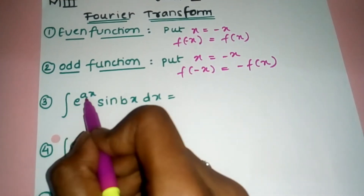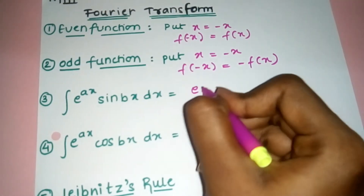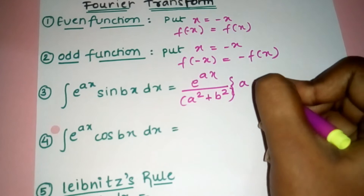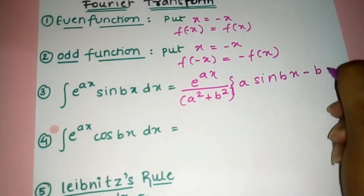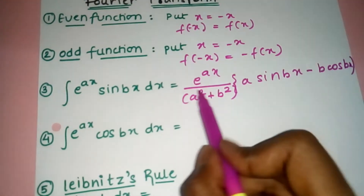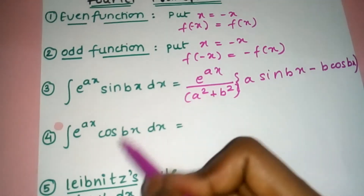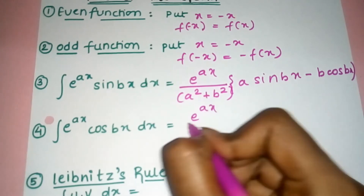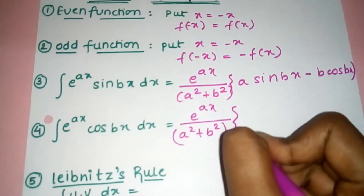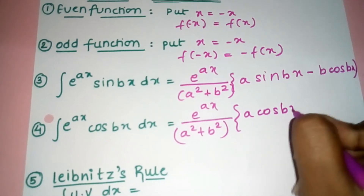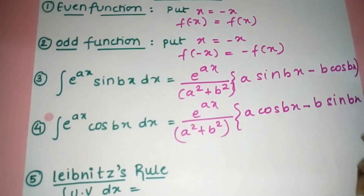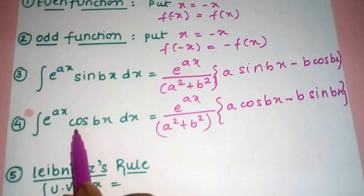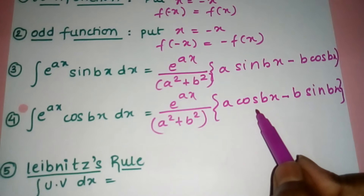Next we have the integration formula for e^(ax) sin(bx) dx. The formula is: e^(ax) / (a² + b²) into [a sin(bx) minus b cos(bx)]. Similarly, for e^(ax) cos(bx) dx, the formula is: e^(ax) / (a² + b²) into [a cos(bx) minus b sin(bx)]. Note that the formula starts with whichever function appears in the question — sin or cos.